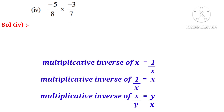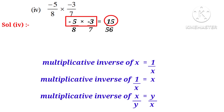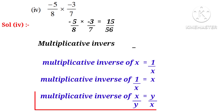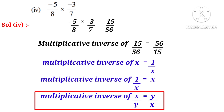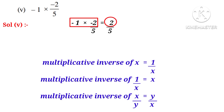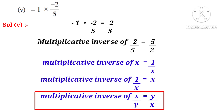Solution 4: minus 5 by 8 into minus 3 by 7. In the numerator, minus 5 into minus 3 is 15. In the denominator, 8 into 7 is 56. So the multiplicative inverse of 15 by 56 is 56 by 15. Solution 5: minus 1 into minus 2 by 5. In the numerator, minus 1 into minus 2 is 2, denominator is 5, so 2 by 5. Multiplicative inverse of 2 by 5 is 5 by 2.